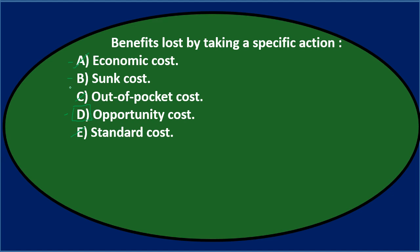Opportunity cost means we always have to consider the alternative when making a decision. We can't just consider the profitability or benefits versus drawbacks of one decision without also considering the path we did not choose. The decision we didn't take is the opportunity cost of that decision-making process, as opposed to sunk cost, which is the result of a past decision we can no longer change.